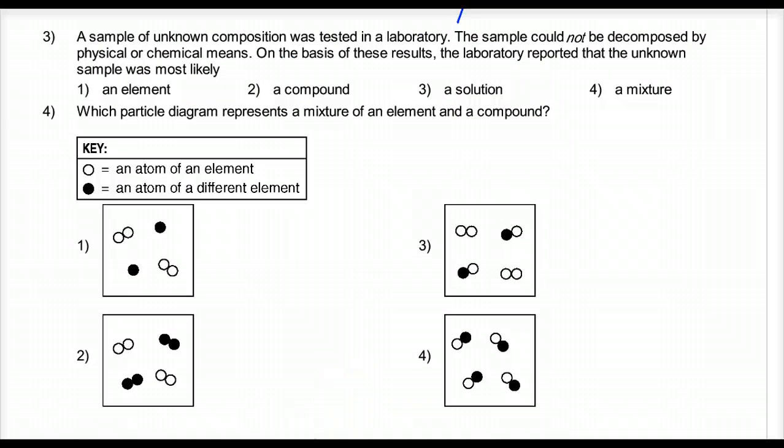A sample of unknown composition was tested in a laboratory. The sample could not be decomposed by physical or chemical means. On the basis of the results, the laboratory reported that the unknown sample is most likely what? Well, if it can't be broken down, decomposed, the fancy word for broken down, by physical or chemical means, it must be the most simplest form of matter. And the most simplest form of matter is a bunch of the same type of atoms. You cannot break down an element into anything simpler that has its own unique set of properties. So number 1 is the answer.